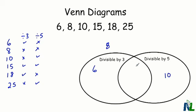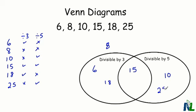The number fifteen is divisible by both three and five, so I am going to put that into the center section of my diagram. The number eighteen is divisible by three, but not five, so it will go in the same section as the six. And finally, twenty-five is not divisible by three, but it is divisible by five, so it goes in the same section as the number ten.